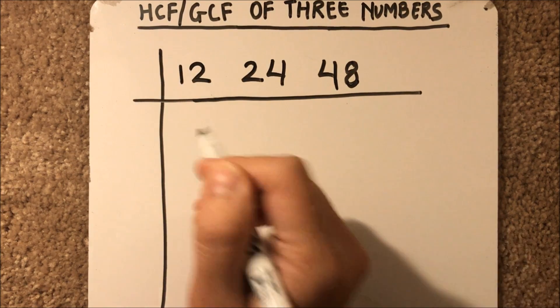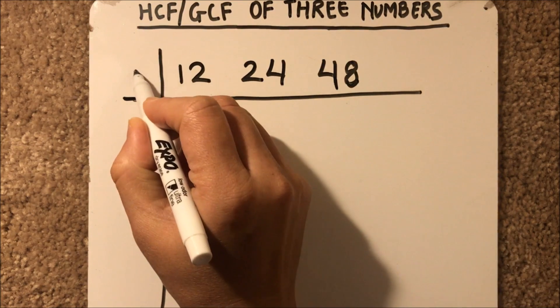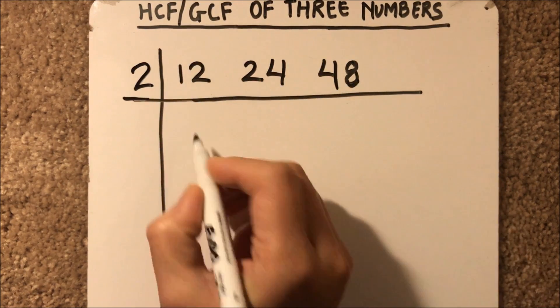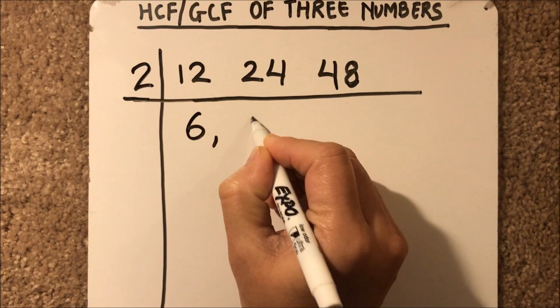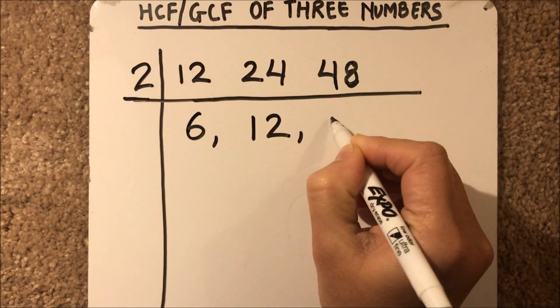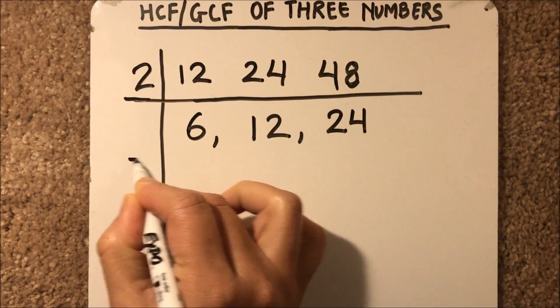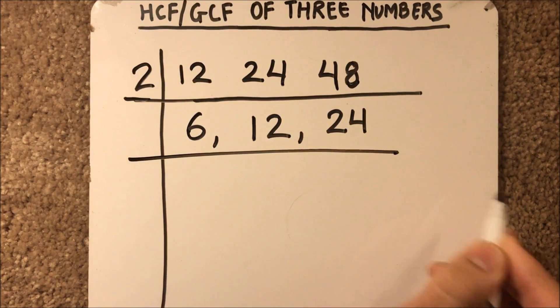Here all three numbers are even, so we'll divide by 2. 2 times 6 is 12, 2 times 12 is 24, and 2 times 24 is 48. Again, all three numbers are even.